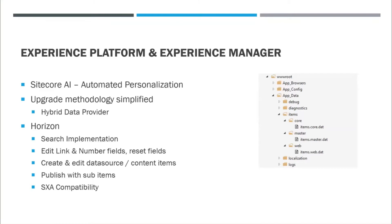That is one of the biggest architecture-related updates in this release. In future upgrades, all you'll need to do to upgrade the core system is to replace these files — there won't be any more packages to update the databases. That's pretty huge. And it's going to have a drastic improvement on publishing time, because all the vanilla instance items required for Sitecore functioning are removed from the master database.